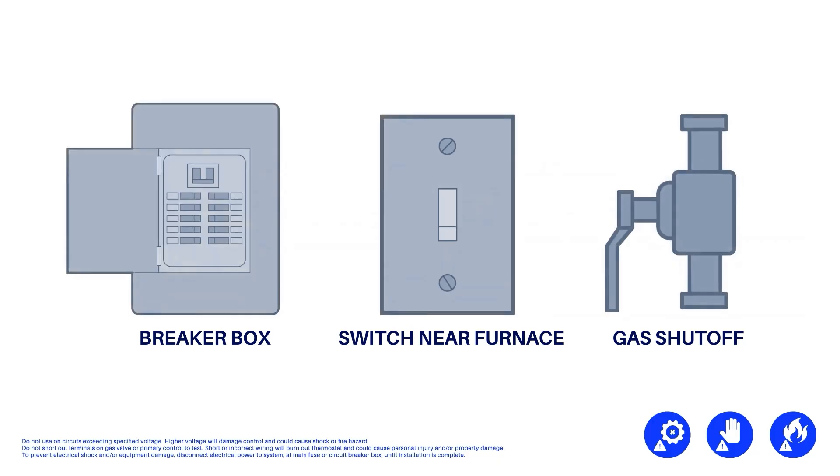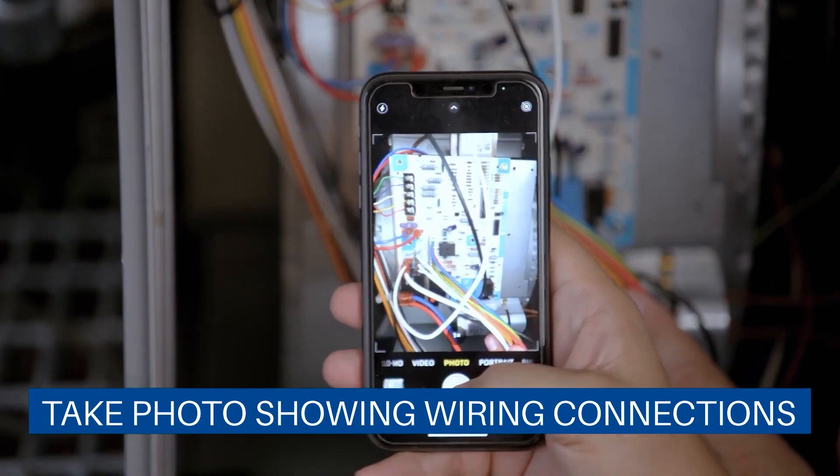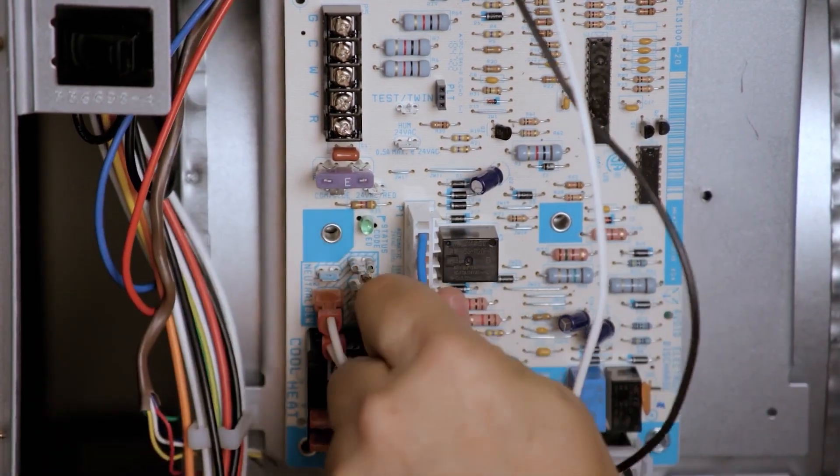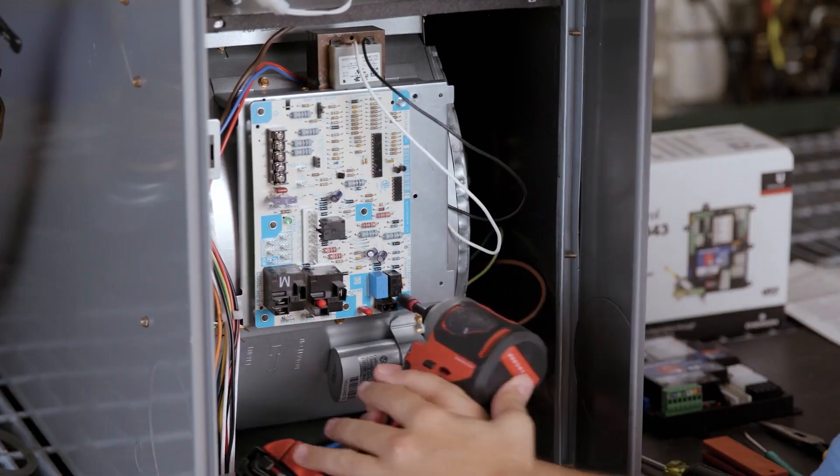First, disconnect all power and shut off the gas. Take a picture of the wires for reference. Remove each of the wires of the old control. Now remove the board.